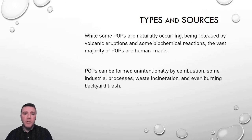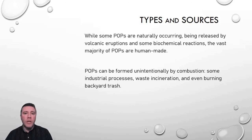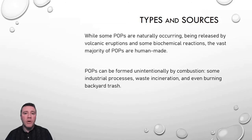Some of these persistent organic pollutants can be formed unintentionally through combustion — when we incinerate waste, for example, or when we burn backyard trash, which is more common in rural areas that don't have trash pickup services, and even as byproducts of some industrial processes. But the ones we're most concerned about are the ones that are intentionally manufactured. Persistent organic pollutants are used as flame retardants and oftentimes as pesticides — insecticides to kill insects, herbicides to kill plants, and fungicides to kill fungi.